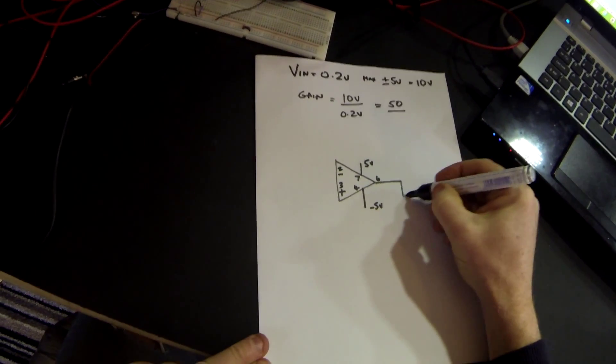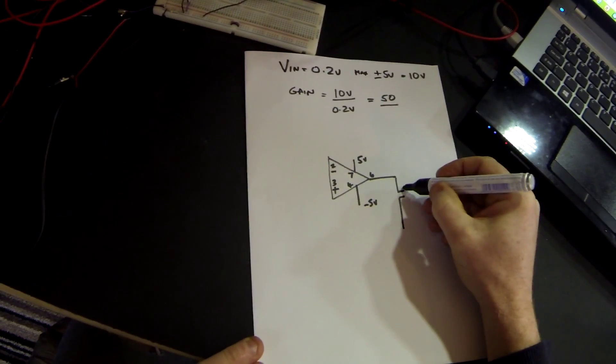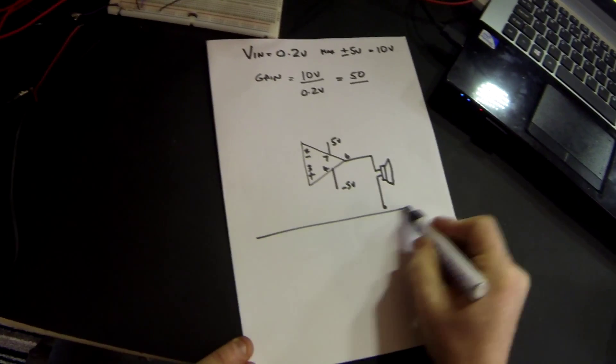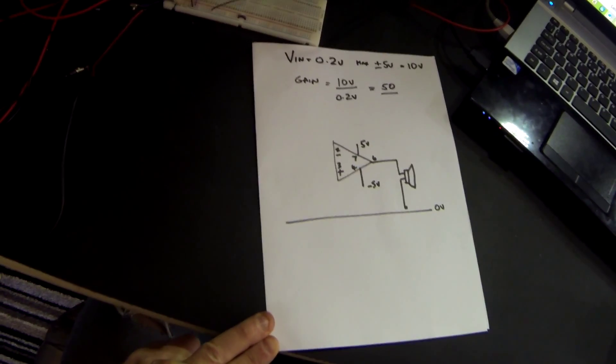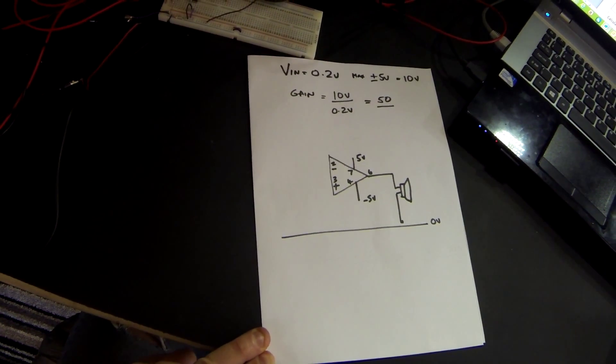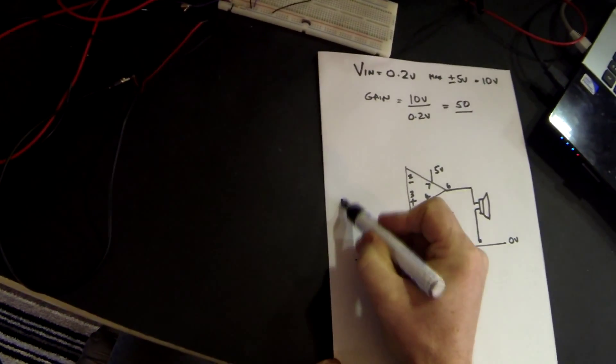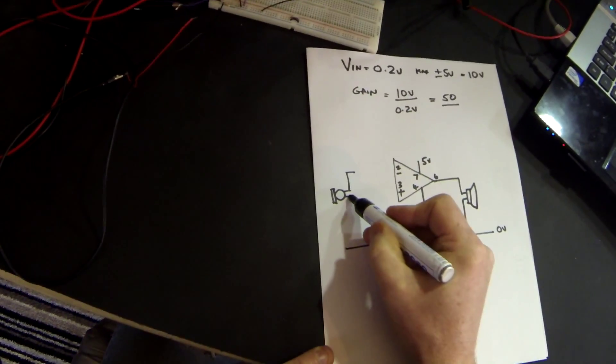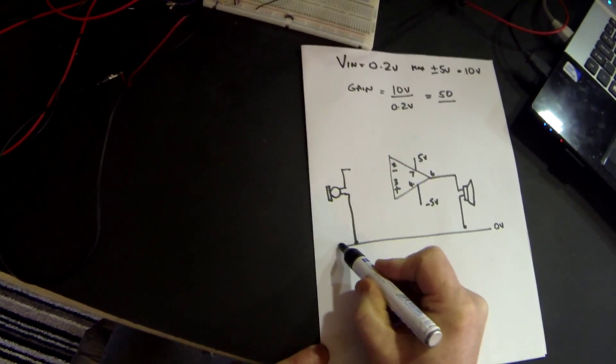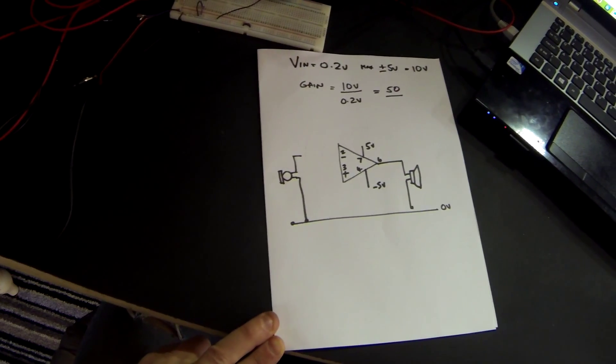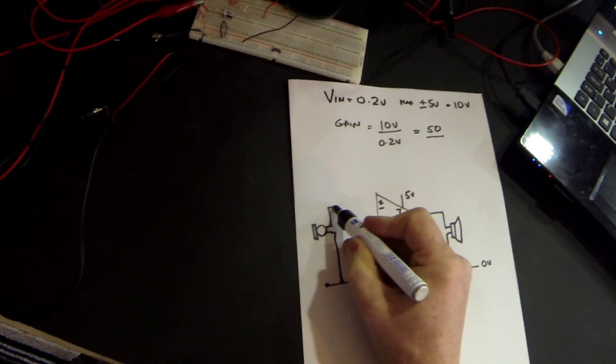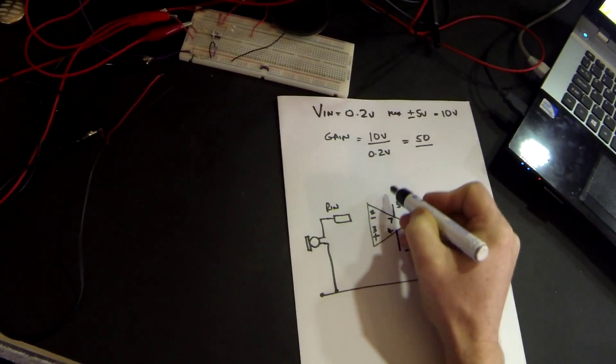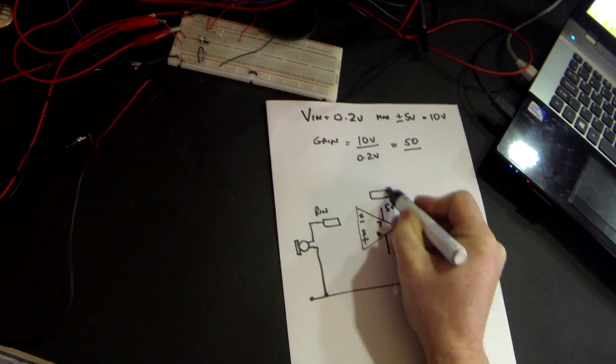The output is going to be connected to the loudspeaker which is going to go down to 0 volts. Then my input is going to be a microphone which will also go down to 0 volts and then I've got my resistor array of RIN and RF.